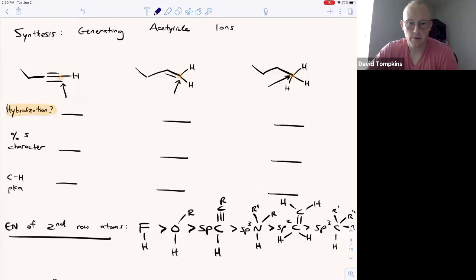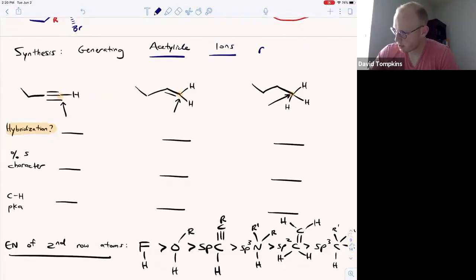So now we are going to move on to a pivotal part of alkyne chemistry and that is the generation of acetylide ions. Acetylide ions take on this form where there's an alkyne which has been deprotonated and bears a negative charge at the terminal carbon.